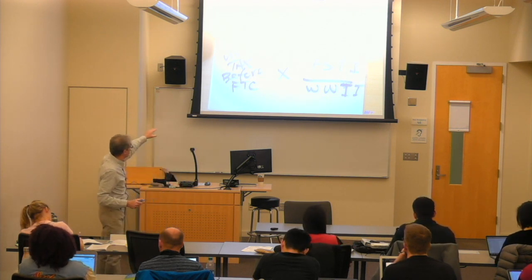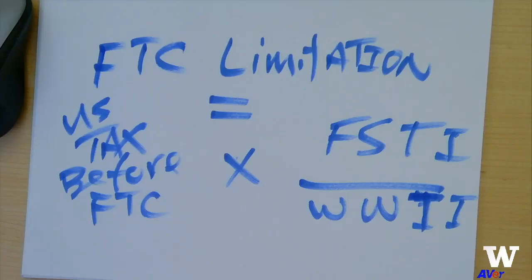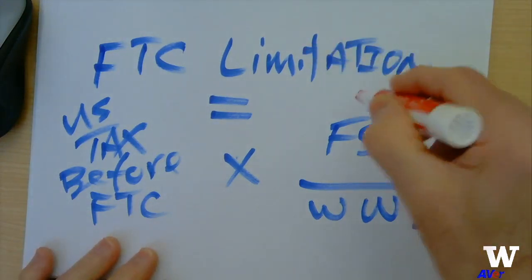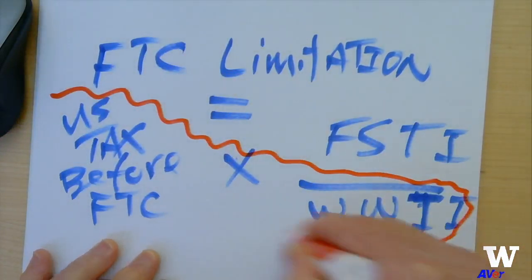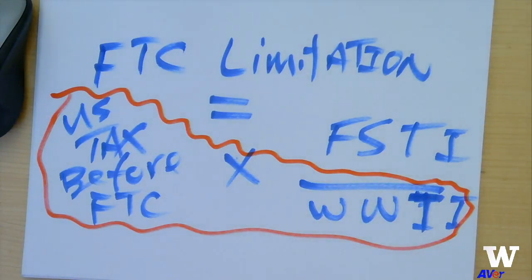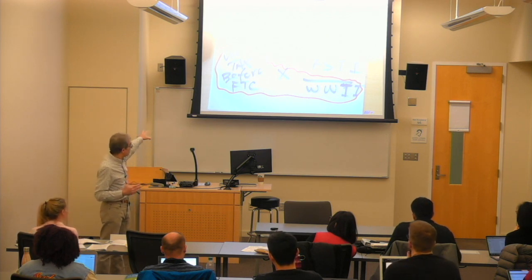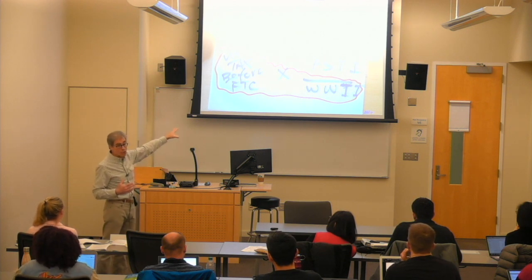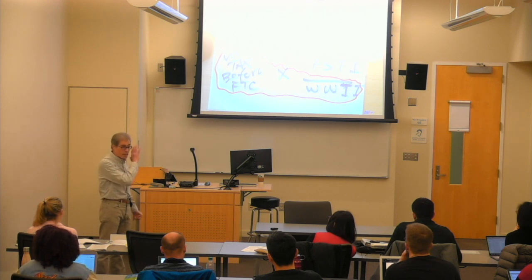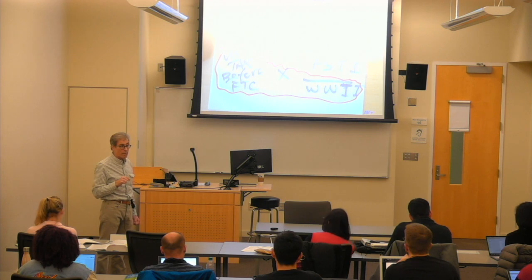If we think of U.S. tax before foreign tax credit over worldwide taxable income, that's our effective tax rate on an overall basis. If we're limiting that effective tax rate on foreign source taxable income, that also means there will be no ability to claim credits against the effective tax rate on U.S. source taxable income. This is allowing the U.S. to make sure that it will collect every dollar of tax on U.S. source income. That's economically what it's getting to.